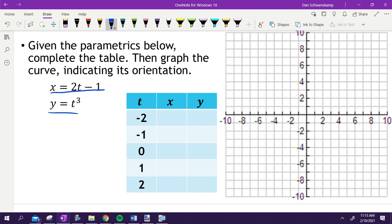So 2 times negative 2 would be negative 4, minus 1 is negative 5, and then just keep going down the line. Negative 3, negative 1, 1. If I plugged in 2, it would be 3. Just plugging in those values into my x equation.